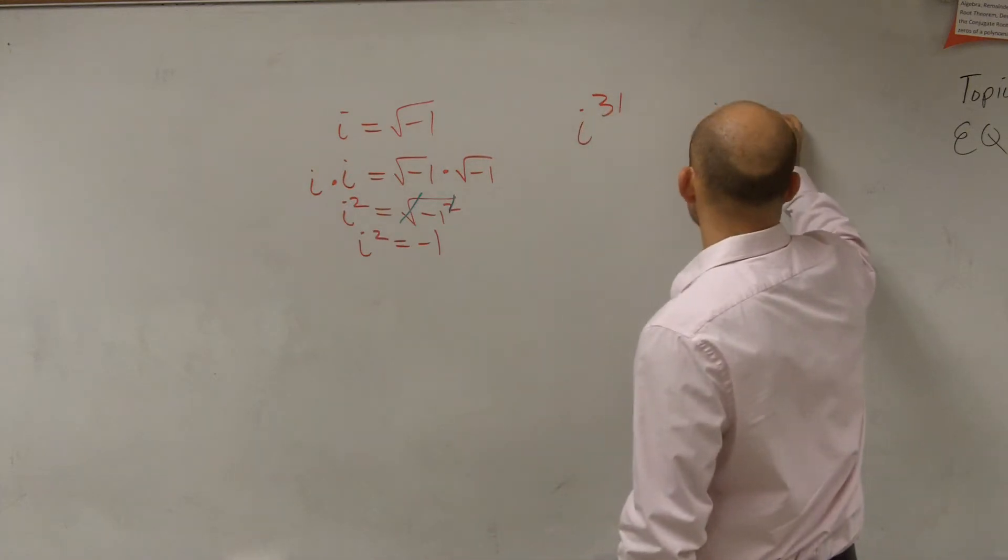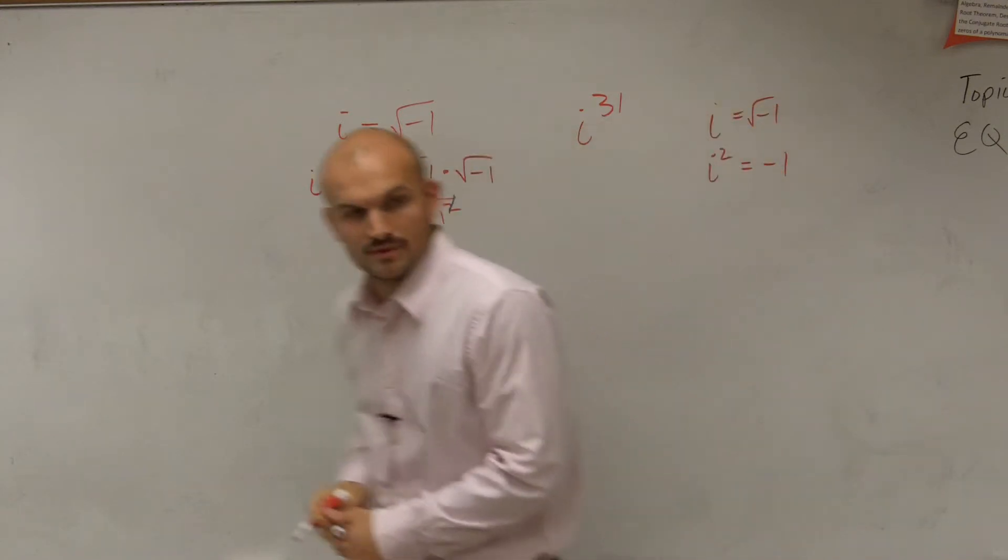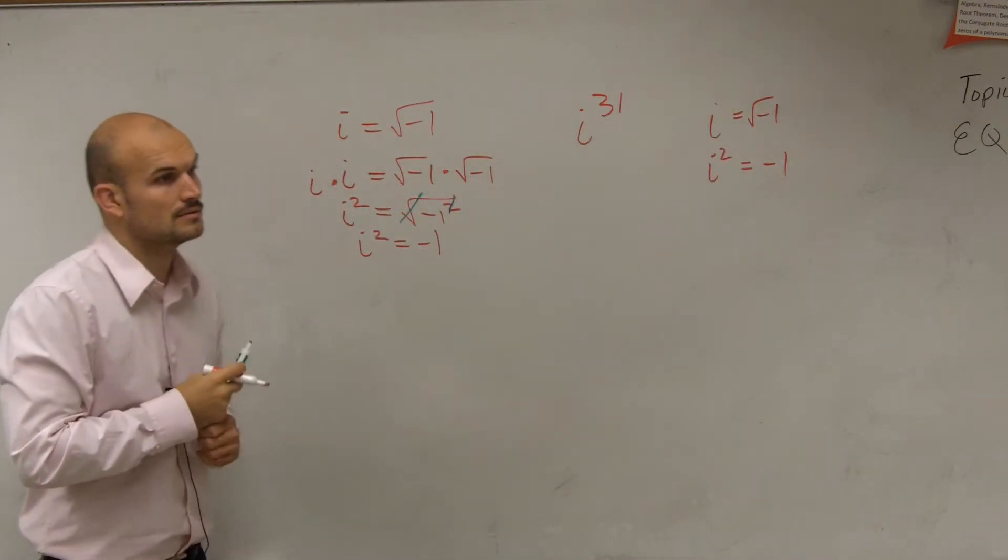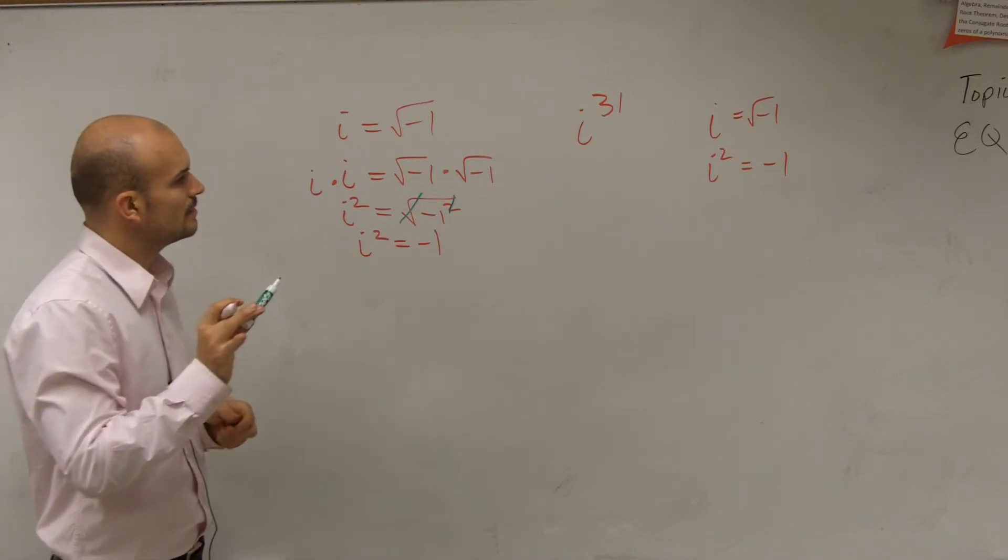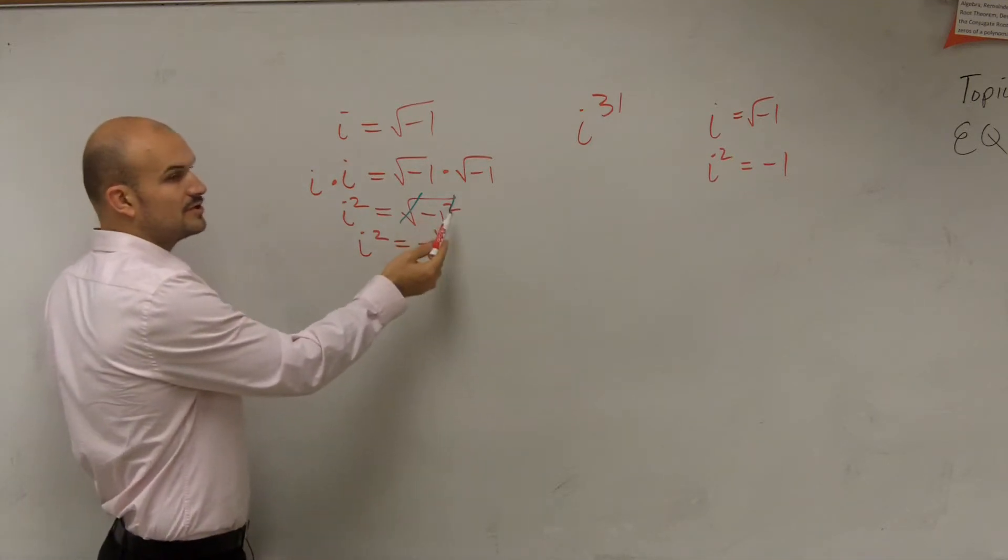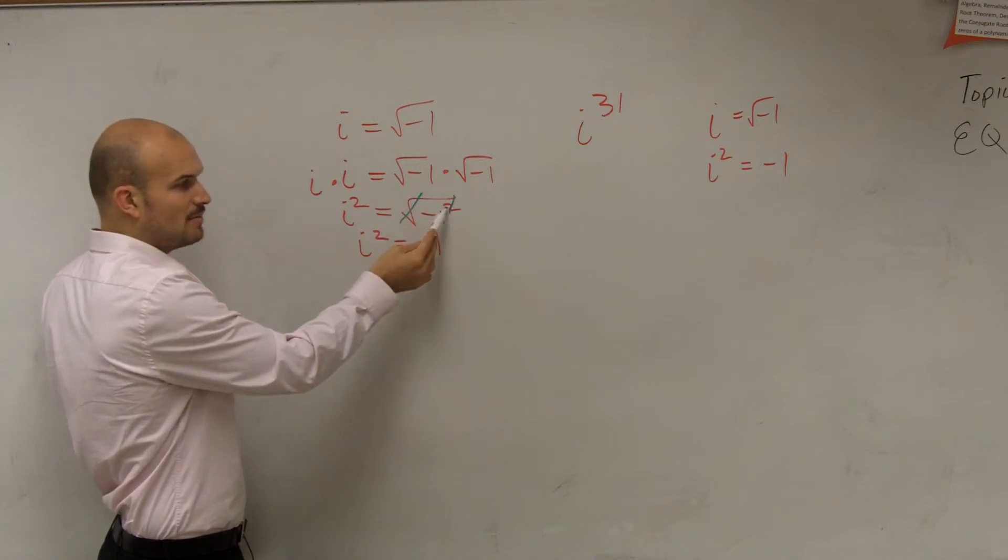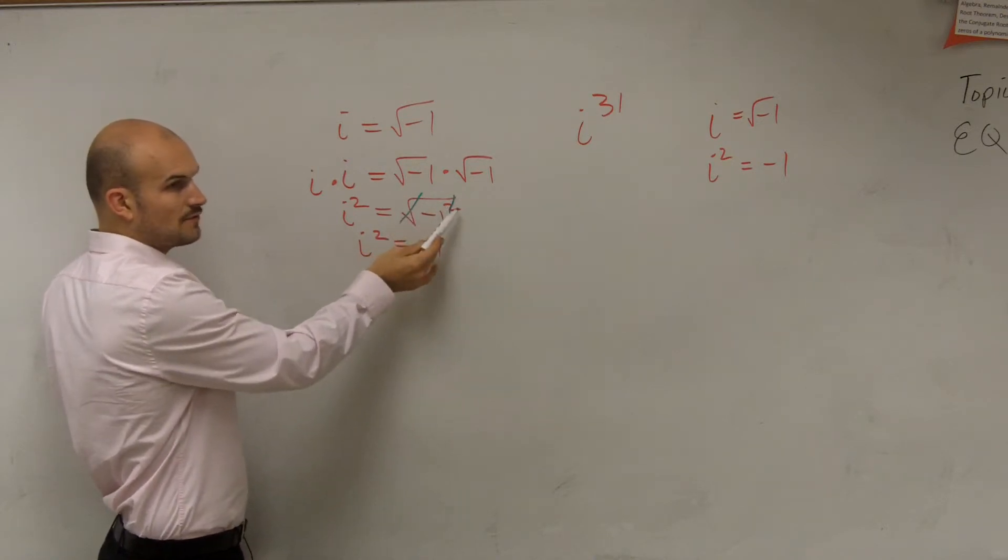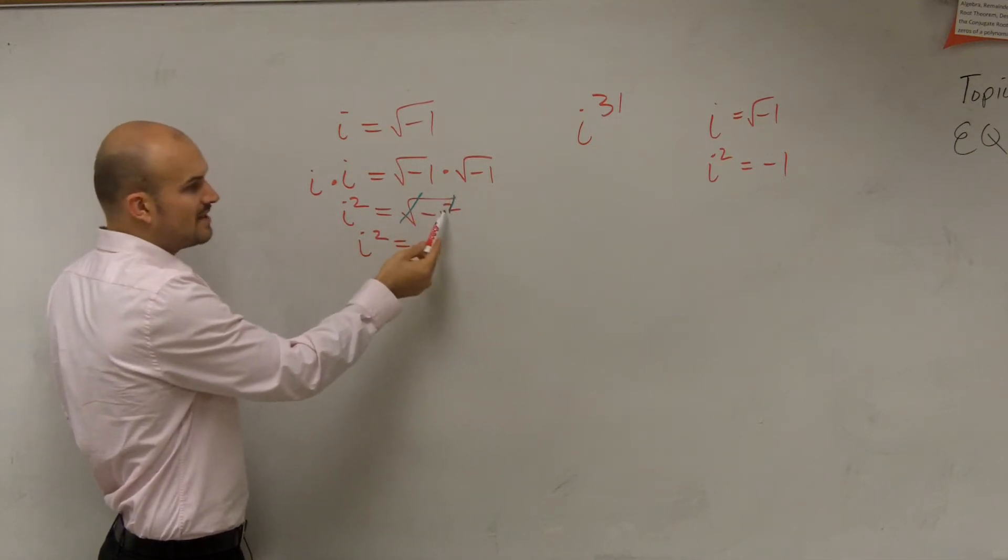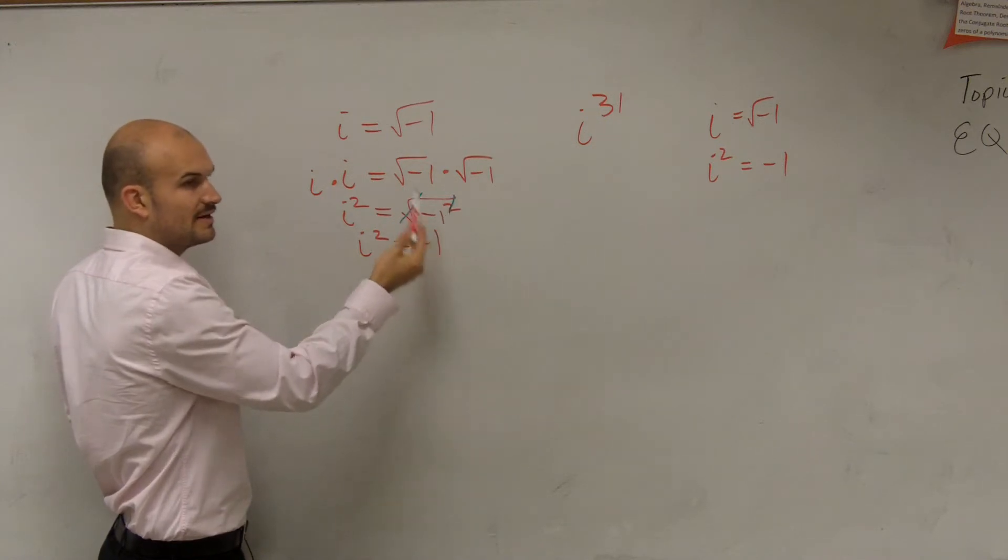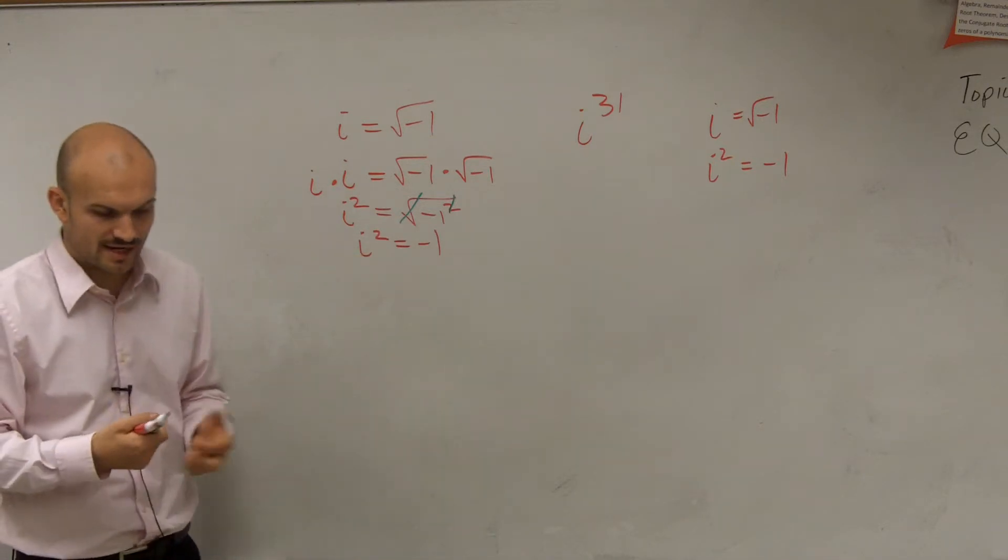So we say i equals the square root of negative 1, i squared equals negative 1. Now, let's multiply. Yes? So what is negative—wait, times negative 1 is equal to negative 1? No. But remember, before you even multiply this, you're taking the square root of squaring. So those operations undo each other. So you don't even ever square that number because you're taking the square root of it. OK? So therefore, I have i squared equals negative 1.